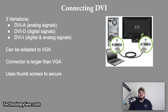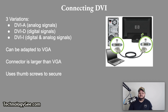You have DVI-A, which only transmits analog signals; DVI-D, which deals with digital signals only; and DVI-I, which deals with digital and analog signals. The DVI can be adapted to a VGA. The connector is larger than the VGA, but like the VGA, the DVI has to be secured using thumb screws.